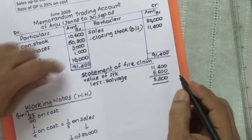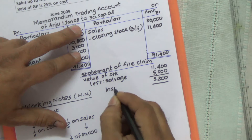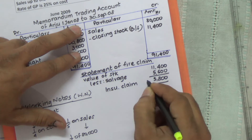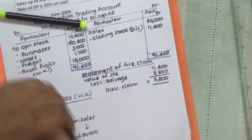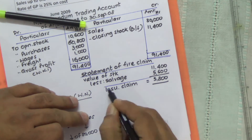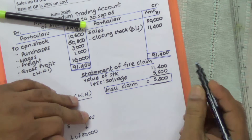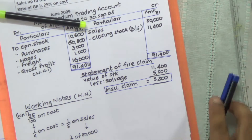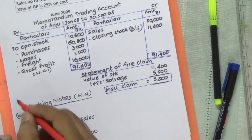This 5,800 is the amount of insurance claim. Insurance claim is equal to 5,800. This is the amount of insurance claim. With this, you would have got 8 marks.